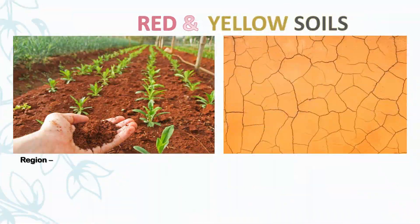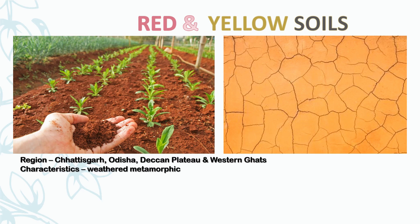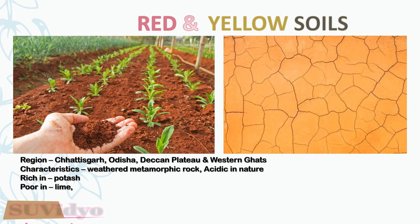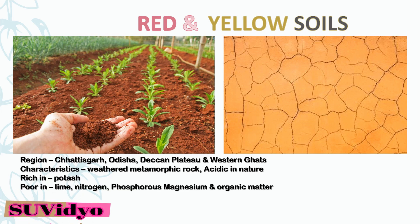Red and yellow soils are found in Chhattisgarh, Odisha, the Deccan Plateau and the Western Ghats. They are found in weathered metamorphic rock, are acidic in nature, rich in potassium but poor in lime, nitrogen, phosphorus, magnesium and organic matter. They are suitable for the growth of rice, wheat, potato, ragi, pulses, etc.